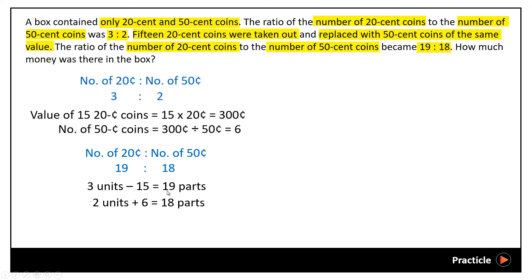Now that we have 2 equations over here, what should our next step be? In order to solve these 2 equations, we will either need to make the number of units the same or the number of parts the same. So for this case, we will actually choose to make the number of units the same, because it's easier to find a common multiple between 3 and 2, which is 6, instead of 19 and 18, which gives us a far larger number.